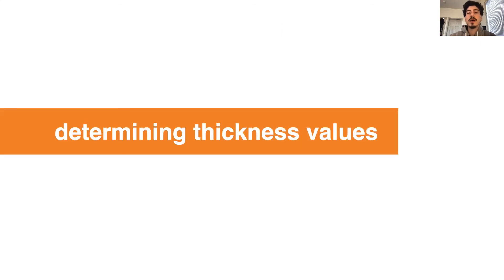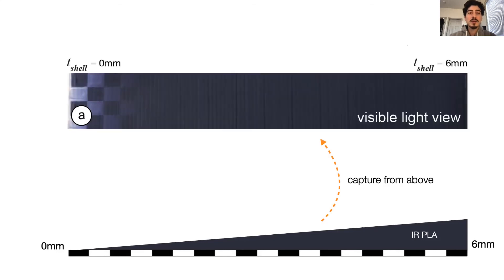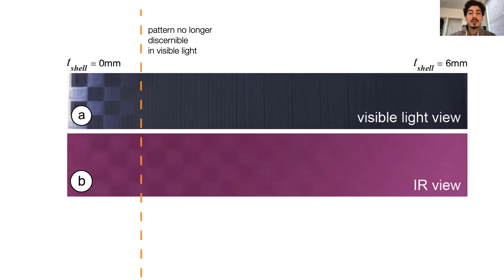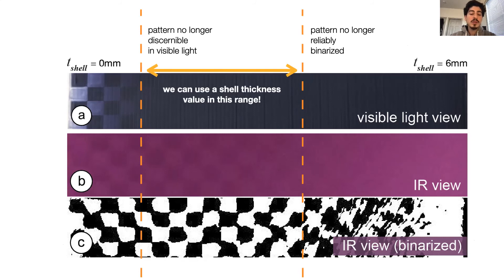Now, you might be wondering what values should be used for the shell thickness and code thickness that I mentioned. To determine the shell thickness, we printed a sample pattern, a checkerboard. And on top of it, we printed the infrared translucent PLA of varying thickness, and then we took a picture of it from above. This is how it looks to us humans. Now, as you see, at a certain point, the pattern is no longer discernible, right? Well, the interesting thing is, when you image it with an IR camera, this is what you get. And when you run our image processing pipeline on the IR image, you're able to reconstruct the checkerboard pattern like this, but as you see, it gets worse with increasing thickness. So at a certain point, the pattern is no longer reliably binarized. These two limits give us a range of possible values for the shell thickness. For the sake of best detection, we use the smaller limit value for our prints.